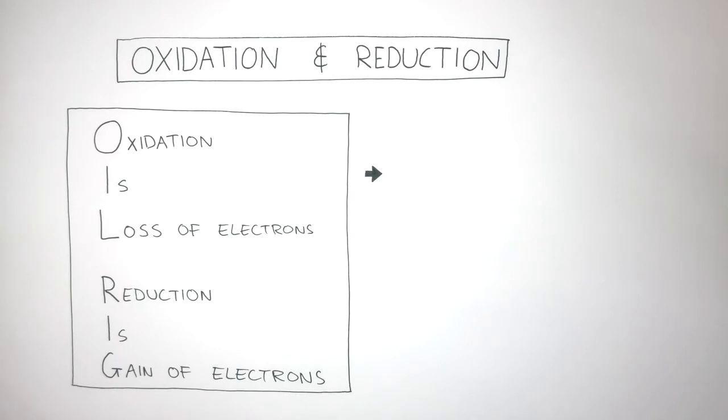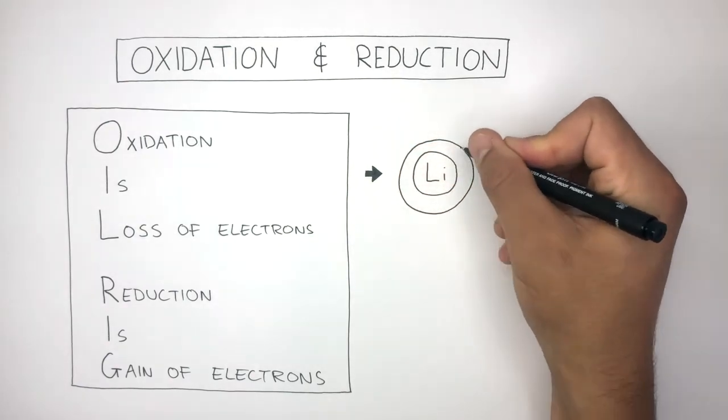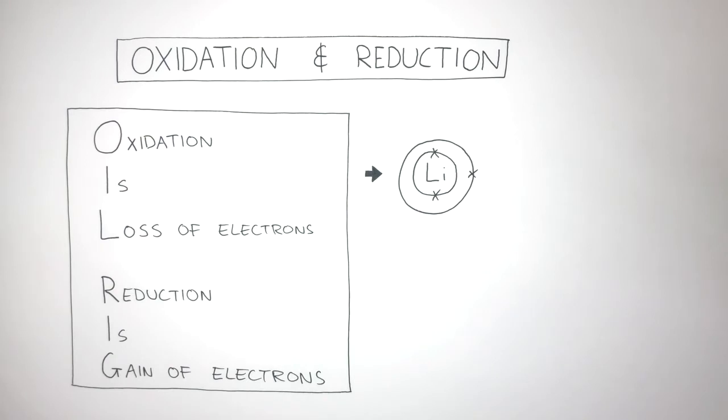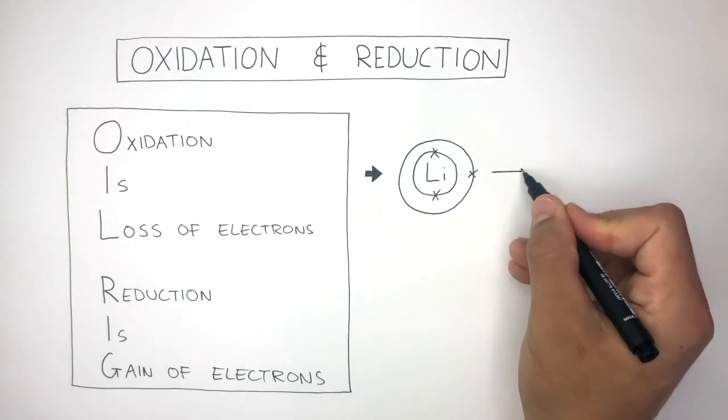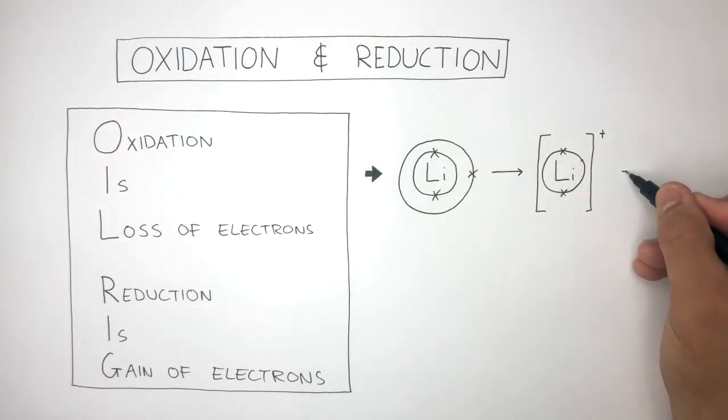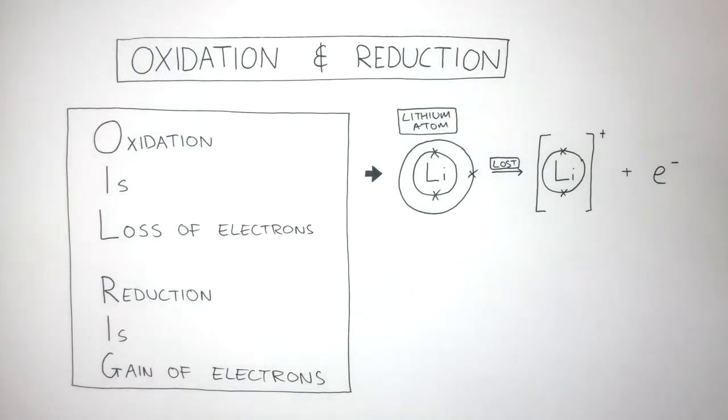Because oxidation is the loss of electrons, we're going to focus on how an atom loses electrons. Here I'm drawing the electronic configuration of a lithium atom, where the atom has two electrons in its first shell and one electron in its outer shell. Oxidation takes place when the lithium atom loses one electron to become a lithium cation, and I'm writing plus e minus to represent the electron that has been lost. So we know oxidation has taken place because this lithium atom has lost one electron to become a lithium cation.